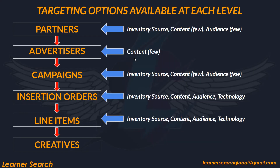At the Advertiser level, only Content Targeting is available. At the Campaign level, Inventory Source is available, along with only a few options in Content and Audience. There is no Technology Targeting at Campaign level either.